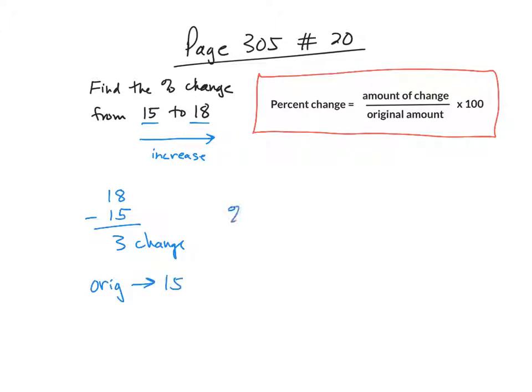The original amount was 15. So the percent change is going to equal the amount of the change, which is 3, over the original amount, which is 15, and then I'm going to multiply it by 100 to turn it into a percent.